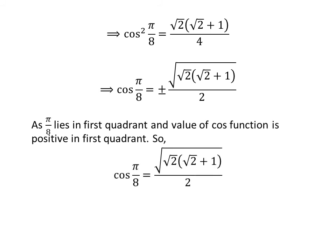As π/8 lies in the first quadrant, the value of cosine function is positive in first quadrant. So, cos(π/8) = √[√2(√2 + 1)]/2.